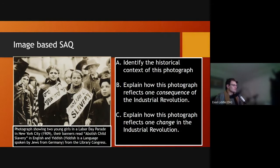The questions are: identify the historical context of this photograph, explain how this photograph reflects one of the consequences of the Industrial Revolution, and explain how this photograph reflects one change in the Industrial Revolution. So we've got a cause and consequence and a change in continuity question here.